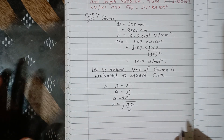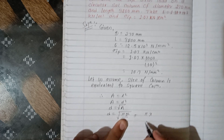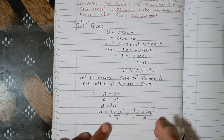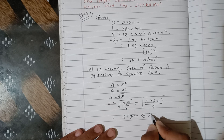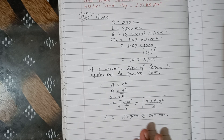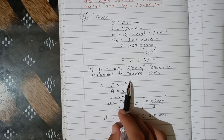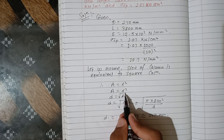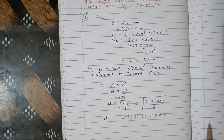So x = √(π × 270² / 4). Computing: π × 270² / 4 = 57,255.53, and the square root gives x ≈ 239.22 mm. This is the equivalent side of the square column. So area = 239.22² mm².